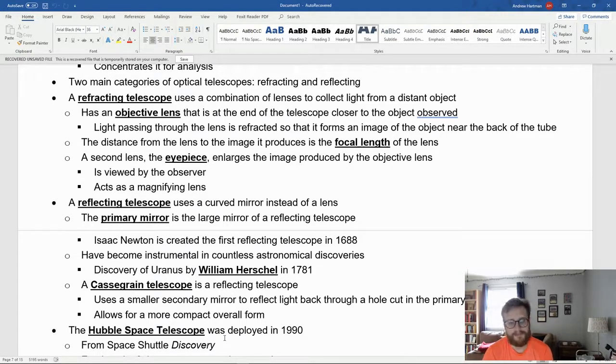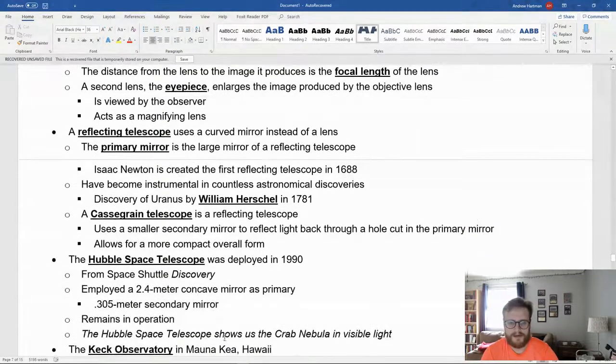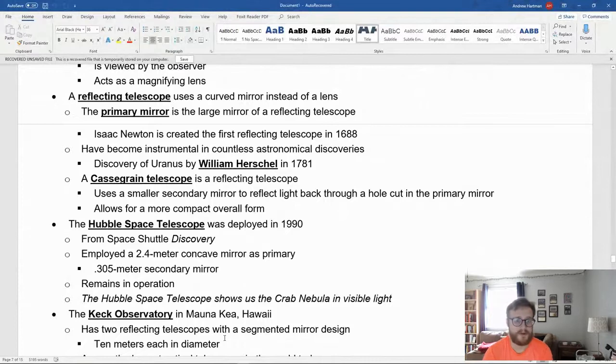A Cassegrain telescope is a type of reflecting telescope that has a primary mirror and a smaller secondary mirror that reflects light back through a hole cut into the primary mirror, creating a more compact overall form. The Hubble Space Telescope is an example of a Cassegrain telescope, deployed in 1990 from Space Shuttle Discovery. It has a 2.4 meter concave primary mirror and a 0.305 meter secondary mirror.